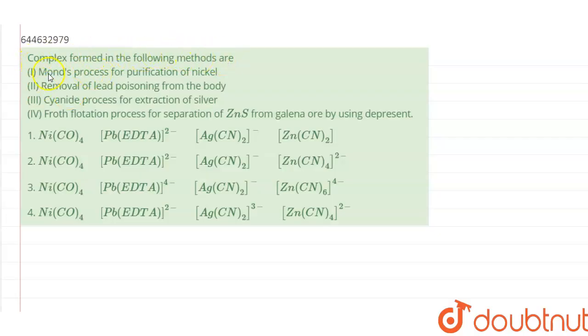Hello friends, the question is: complex formed in the following methods are: Mond's process for purification of nickel, removal of lead poisoning from the body, cyanide process for extraction of silver, froth flotation process for separation of ZnS from galena ore by using depressant. Let us solve them one by one.